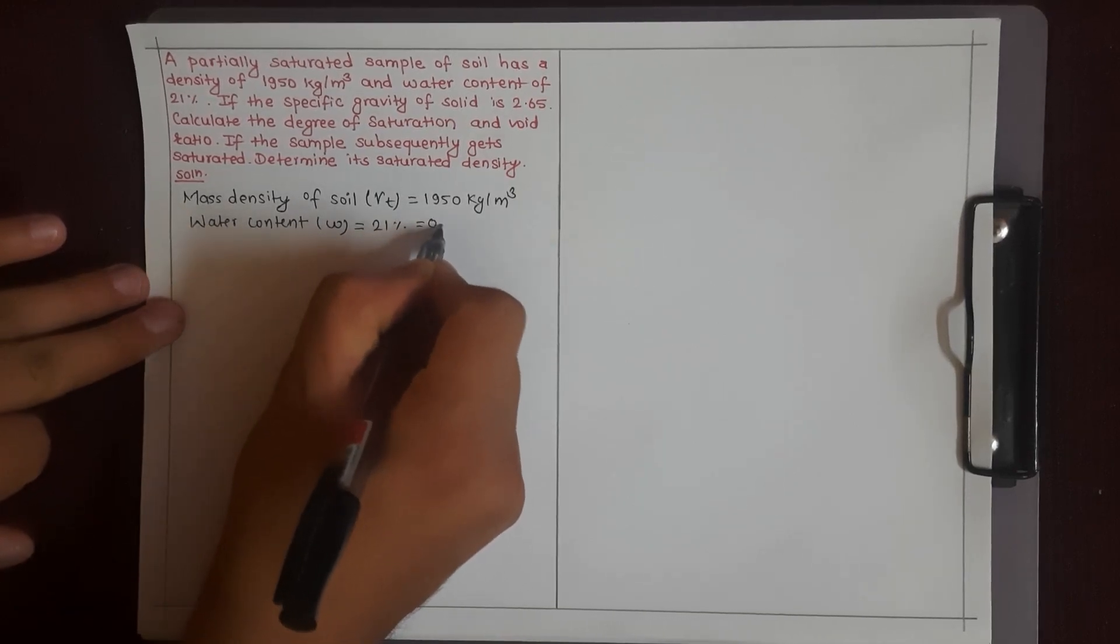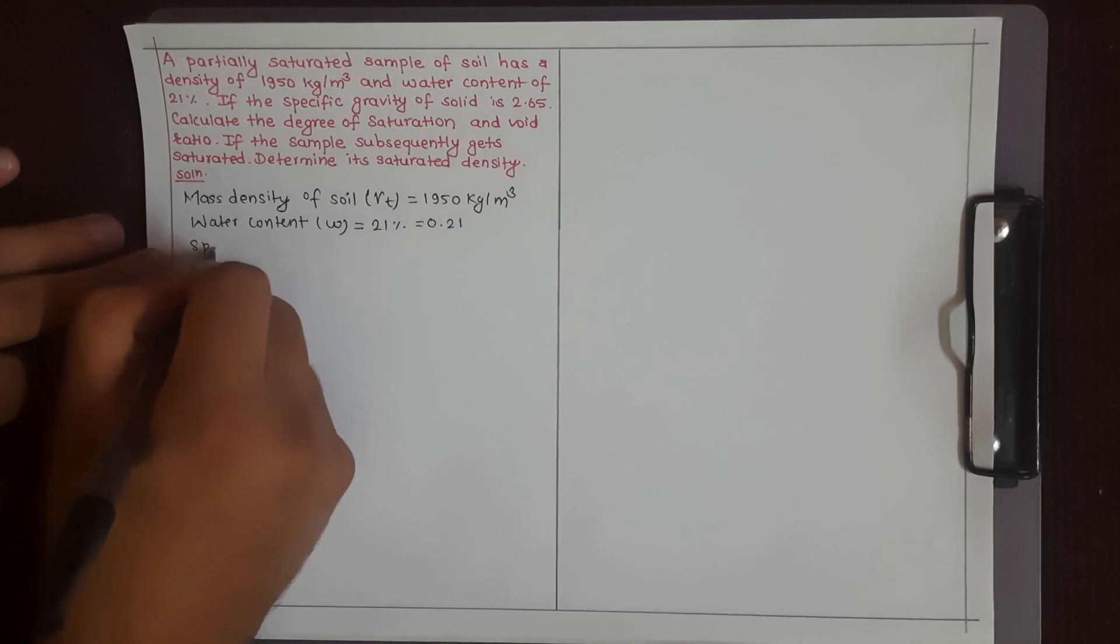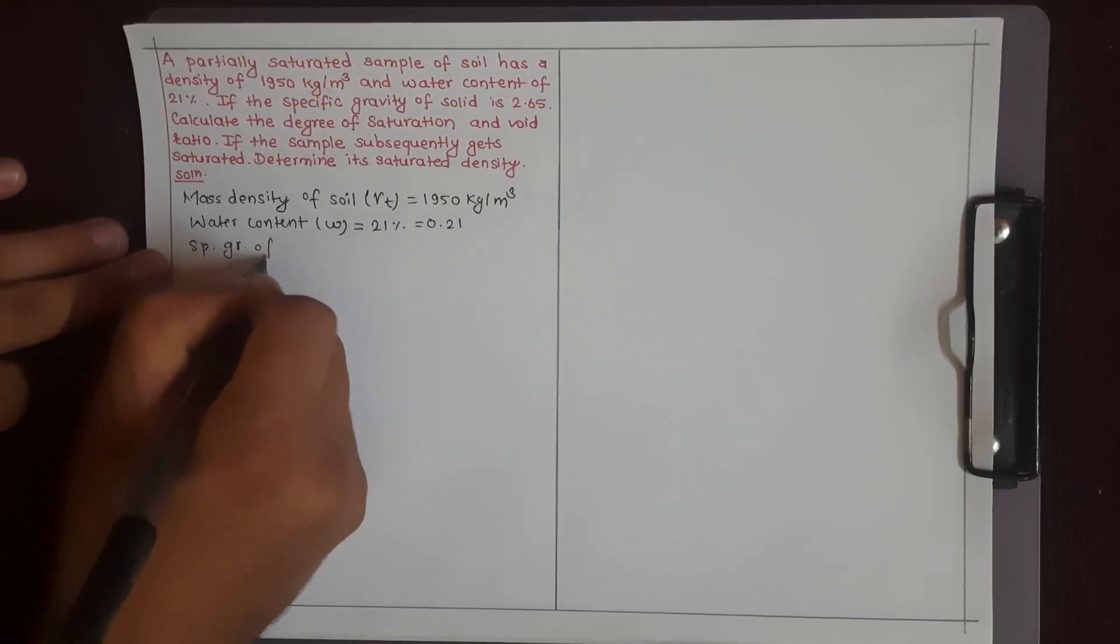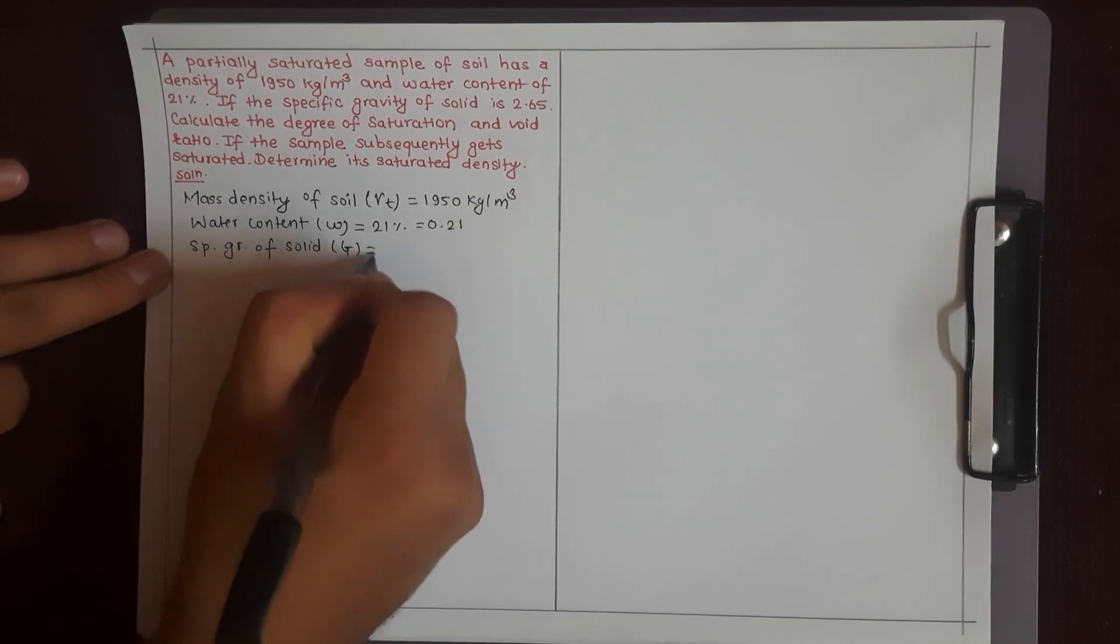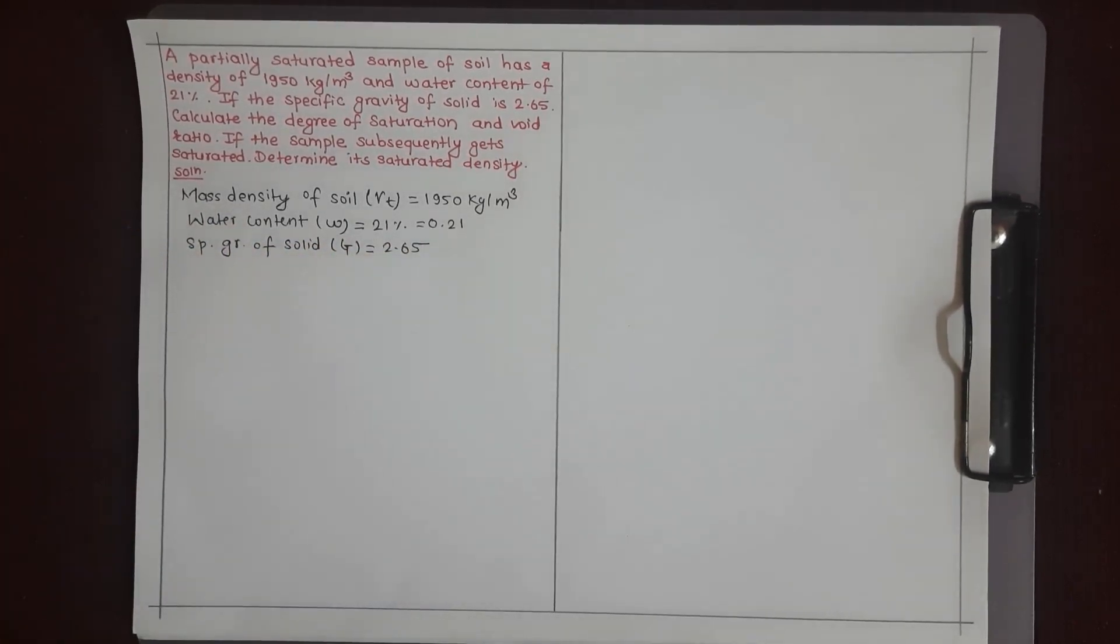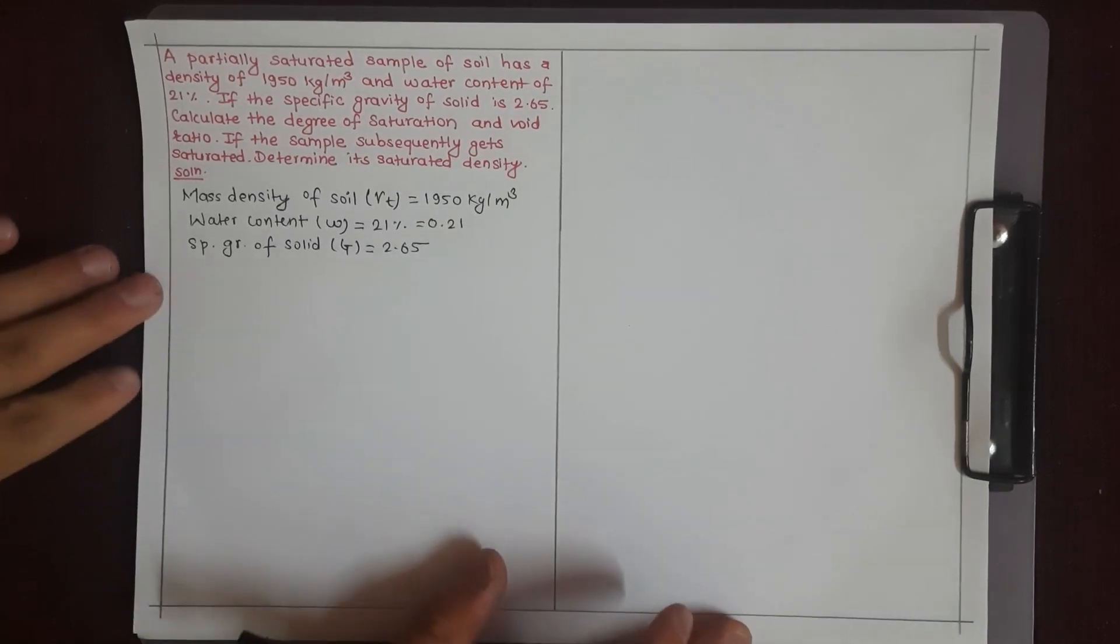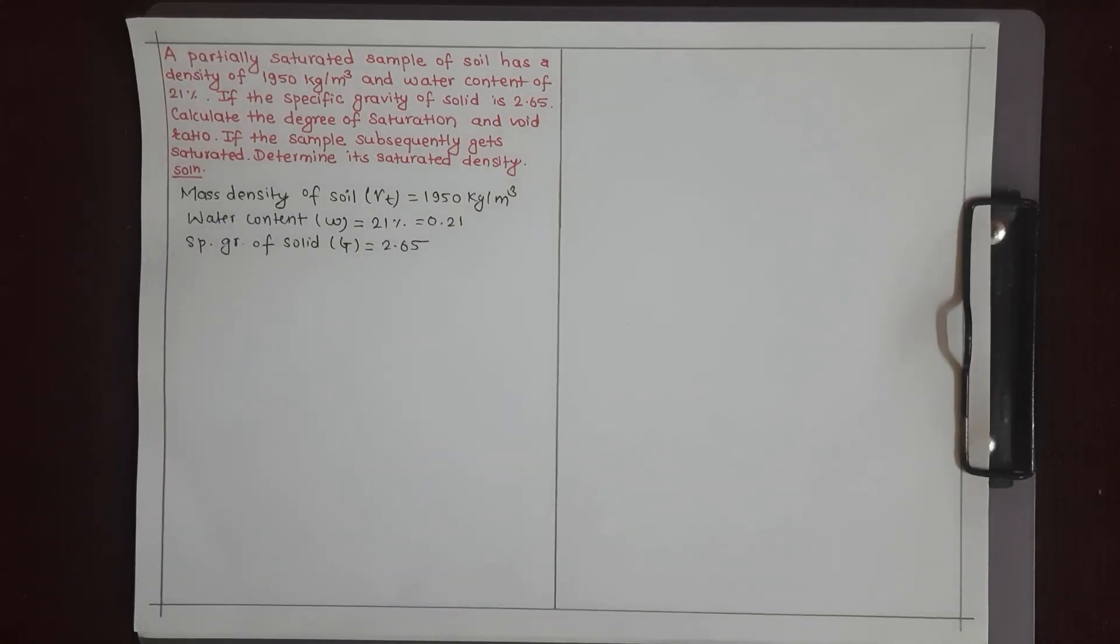The specific gravity of solid, capital G, is 2.65. We need to find the degree of saturation and void ratio.